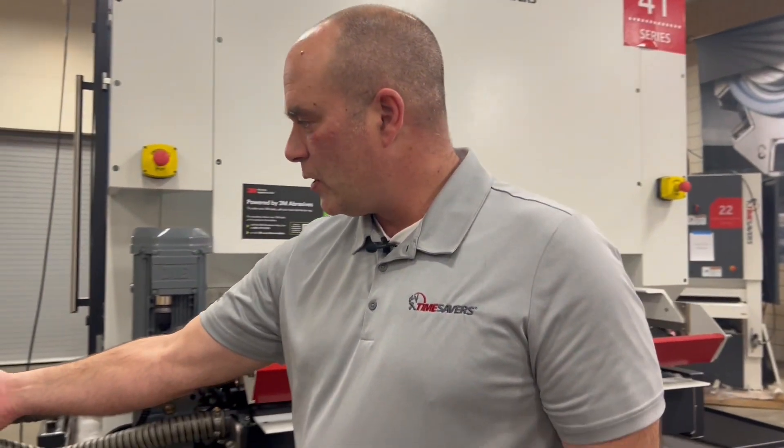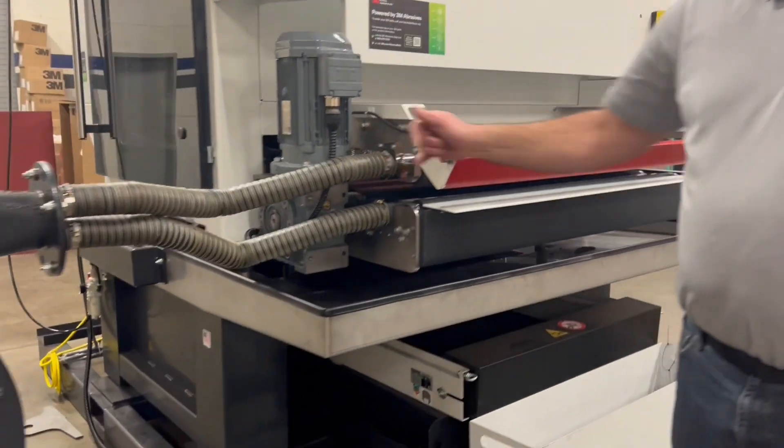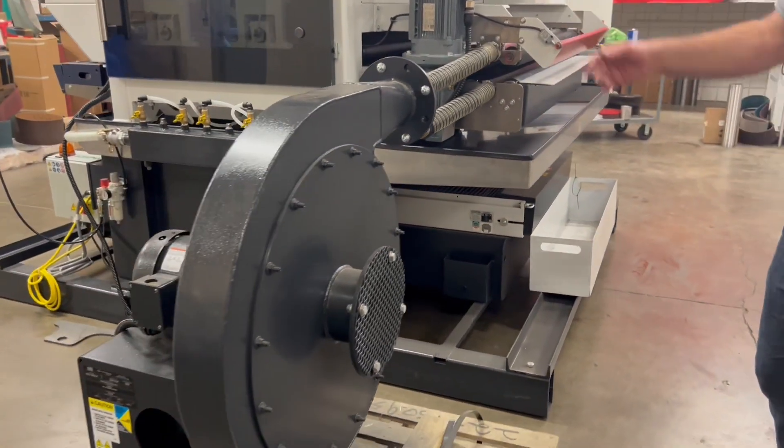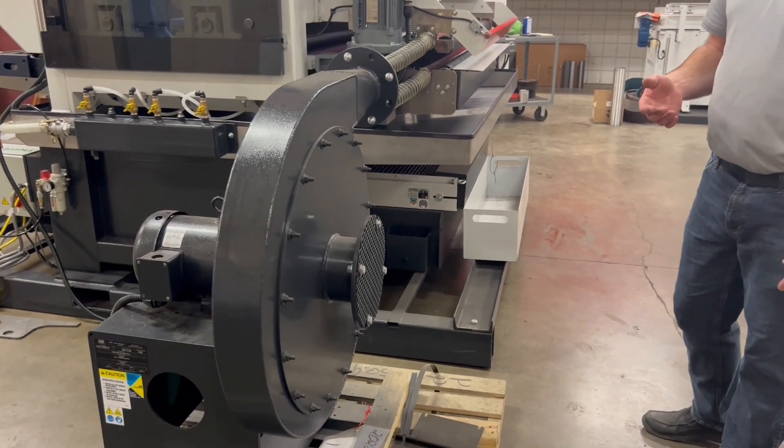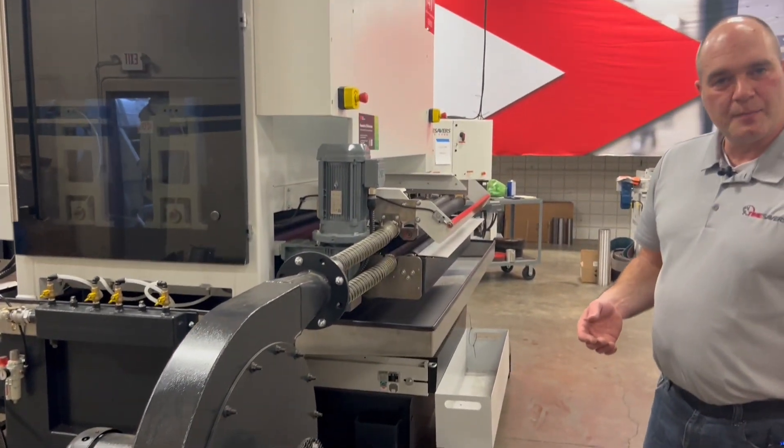Here is our standalone blower unit. This is for the air knife dryer itself. A couple flex ducts here connected to the machine, and that's what keeps your parts dry.